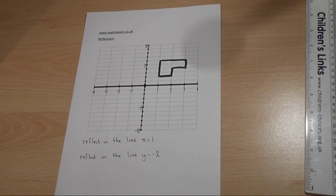Now, at grade C at GCSE, you must be able to reflect shapes in lines given by equations, and I've got two examples to show you here.